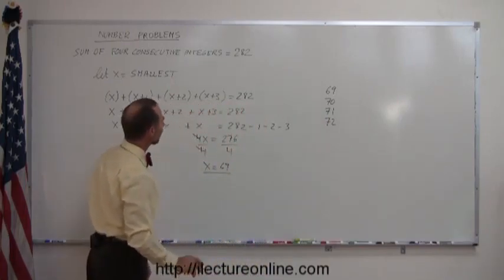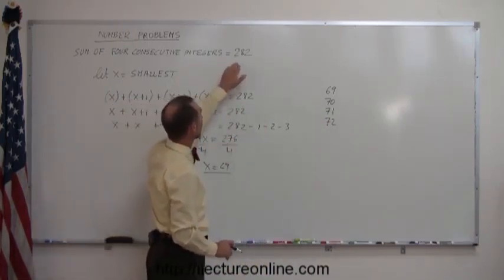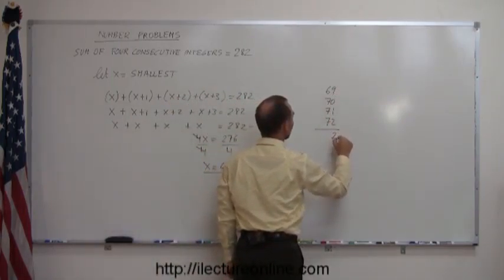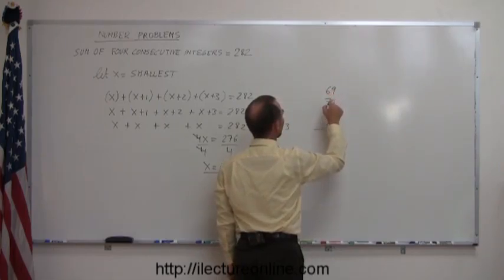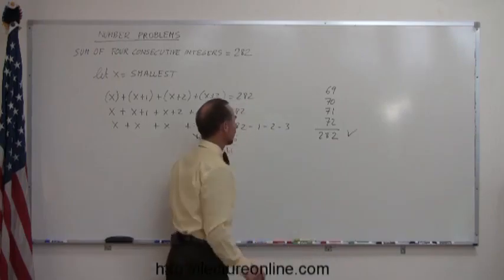Okay, now just to make sure that we did this correctly, what we could do is add them together and make sure we end up with 282. So when I add them together, 9 plus 1 is 10, plus 2 is 12, that's 2, carry the 1, 7, 7, 7, 7, that's 28. And sure enough, bingo, correct answer, just to make sure.